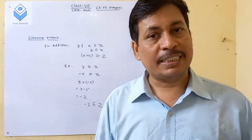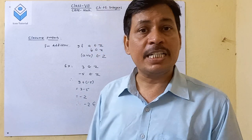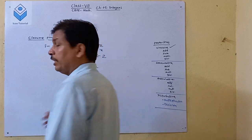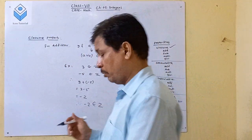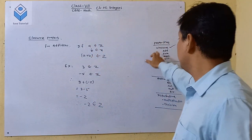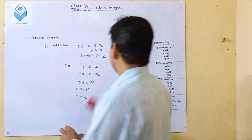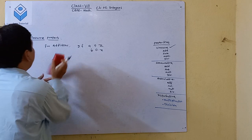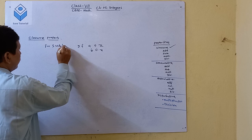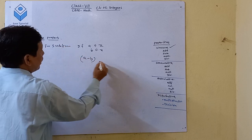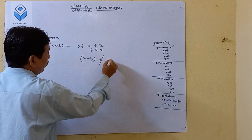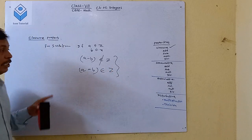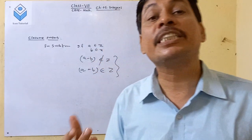Similarly, for subtraction: if A is an integer and B is an integer, then we need to check whether A minus B is an integer or not. Let's discuss this.